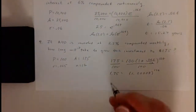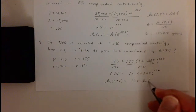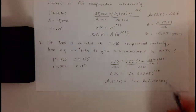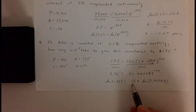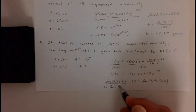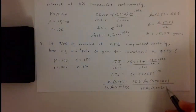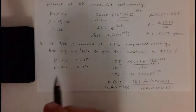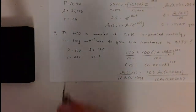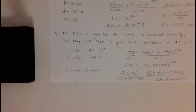We take the log of both sides and bring the twelve T out front, then divide both sides by the twelve and by the log to isolate T. Plugging this into your calculator, it turns out to be approximately twenty-two point four four years. That's how long it would take to grow one hundred dollars to one hundred seventy-five dollars.